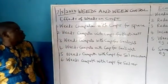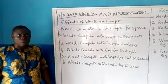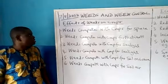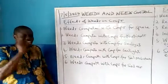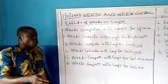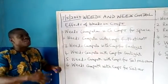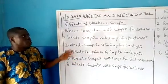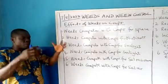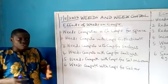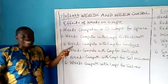Now we have the effects of weeds on crops. Weeds have some effects on crops in the farm. Number one: weeds compete with crops for space. A characteristic of most weeds is that they are fast-growing. So when you grow your crops, within a short time some weeds in that farm or plot grow faster and occupy space meant for the crops. Number two: weeds compete with crops for nutrients. When plants are planted they absorb nutrients from the soil, and the weeds growing alongside also absorb nutrients.